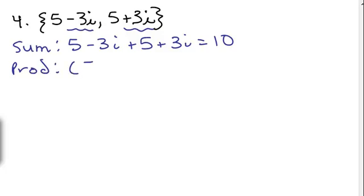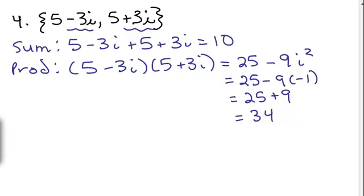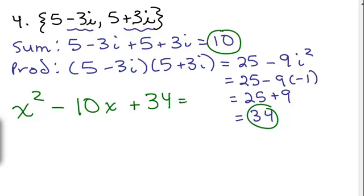Product. 5 minus 3i times 5 plus 3i. That's going to end up with the difference of squares. So 5 times 5 is 25 minus 9i squared. Now I know some of you go directly to plus 9 because this i squared is going to change that to a plus 9. But I am just writing out all the steps for now. So some people go directly to 25 plus 9. And that's 34. So that's the product. So we're ready to plug it in. X squared minus the sum. Now the sum is 10. So we put 10x plus the product plus 34 equals 0.